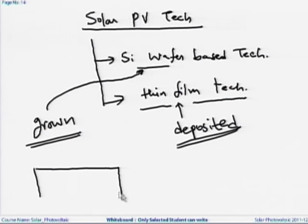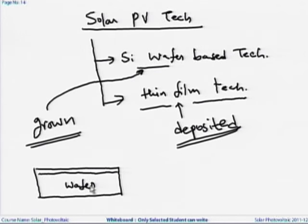For silicon wafers, the wafer itself is used to make the solar cell. The wafer is about 180 microns thick, which gives it enough mechanical strength to support its own weight, so no additional substrate is needed. But thin film materials are direct bandgap semiconductors with very high absorption coefficients, so the required thickness is only about 1 micron or even less — much thinner than the diameter of a human hair (about 100 microns).